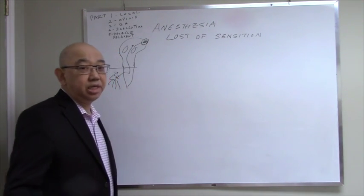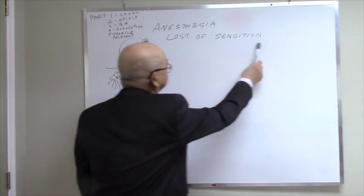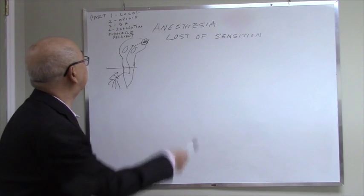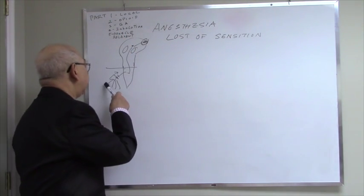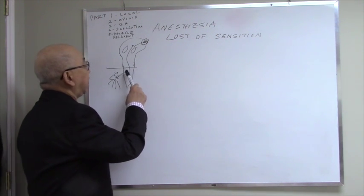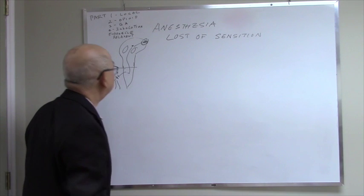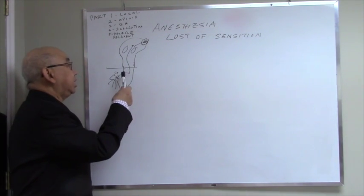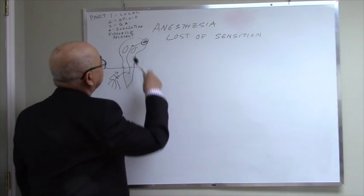Anesthesia means loss of sensation. As mentioned in the five-month lecture, sensation comes in via the receptor, transportation, synapses, goes to the thalamus and goes to the brain. So to lose sensation, you can cut off the transportation, stop the impulse at some point, or you can scramble the brain.